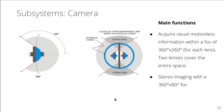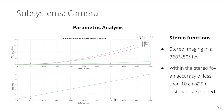The camera subsystem consists of hyperhemispherical lenses inside the Daedalus casing, with a very wide field of view of 360 by 260 degrees. When placed opposite to each other, they yield a stereo area of 360 by 80 degrees. A parametric analysis shows that even a small stereo baseline of 20 cm yields an accuracy of 10 cm at a distance of 5 meters.